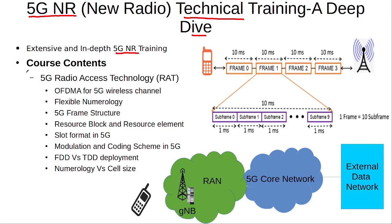As far as the course contents are concerned, first we start with the 5G radio access technology and we discuss how OFDMA is used in 5G and what are the flexible numerologies that are used in 5G. Then we discuss the 5G frame structure, what is the difference between the resource block and the resource element, what are the different slot formats that are used in 5G, and what are the different modulation and coding schemes.